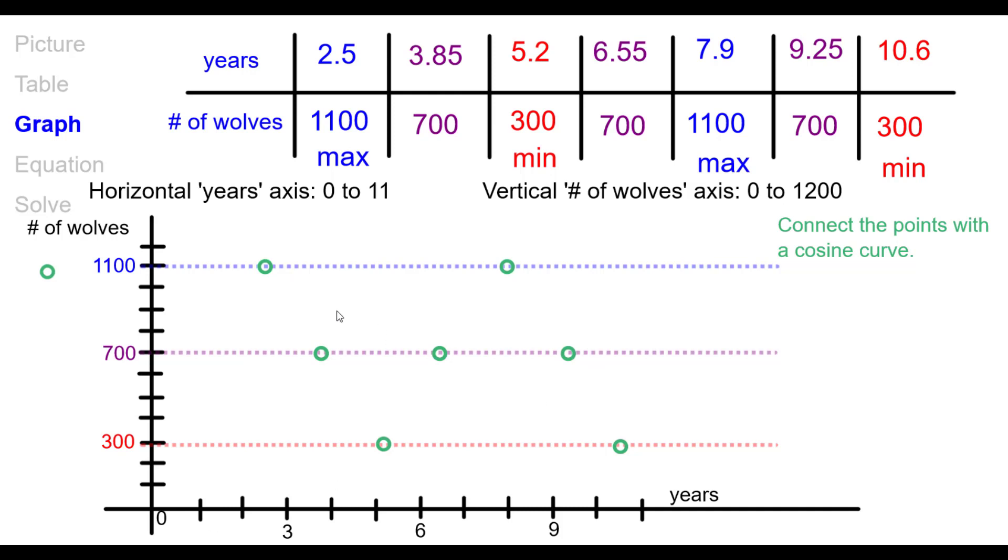Now what we want to do is connect these points with a cosine curve. I know you'd be tempted to just draw straight segments, but we know that this is a cosine or sine curve. So let's go ahead and start with the first two and go concave down, like a frown. Then concave up, like a smile. Concave down. And concave up. Pause as needed to get caught up.